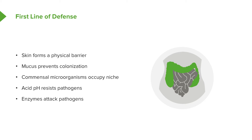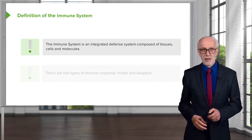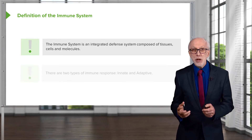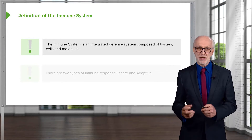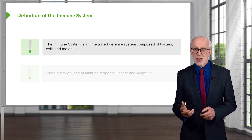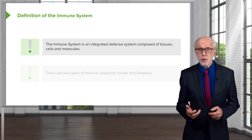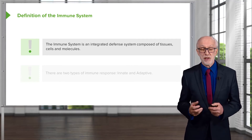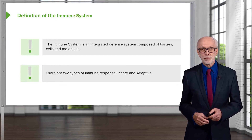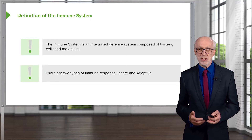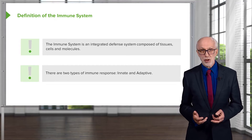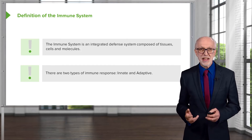And then we have enzymes that can attack pathogens. So all of these things collectively are very important in providing defense against infection, even though they are not, strictly speaking, part of the immune response. So what exactly is the immune response? Well, the immune system is an integrated defense system composed of tissues, cells, and molecules. There are actually several different types of cells and molecules involved, and we can divide the immune response into two different types: what we call the innate response and the adaptive response.